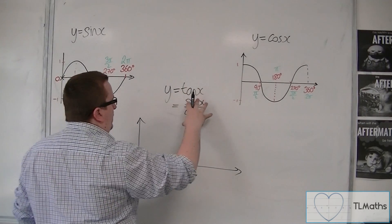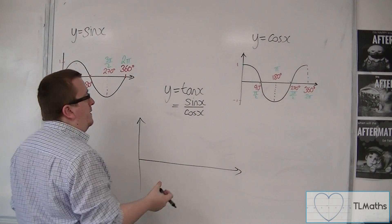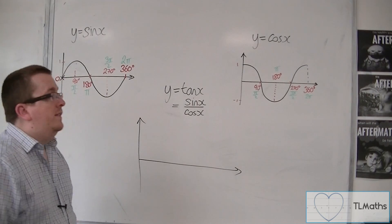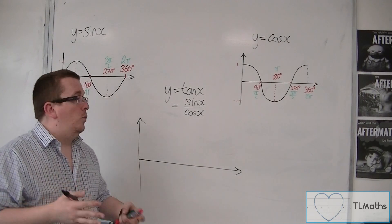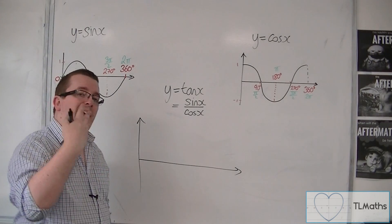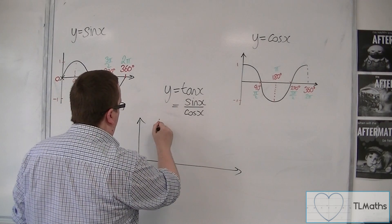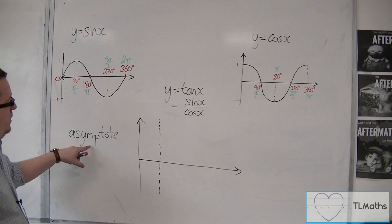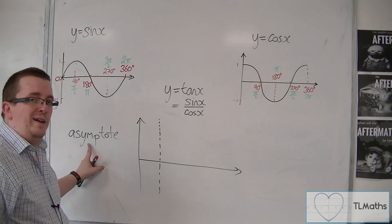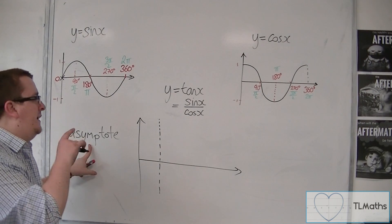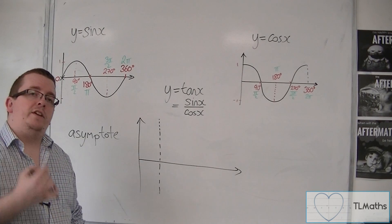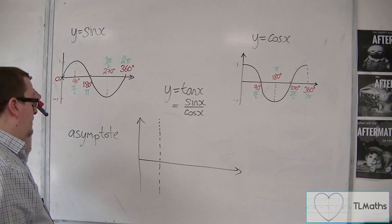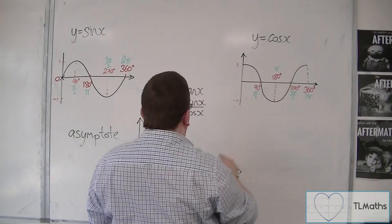If tan x is sin x over cos x, that means when the denominator is 0, which it can be because cos x is 0 at 90 degrees and 270, you're dividing by 0. At those points are what I've referred to as asymptotes - vertical asymptotes. An asymptote, in the vertical sense, is a line that the curve cannot cross. It is a line that the curve tends towards, and we usually draw them in as dotted lines.